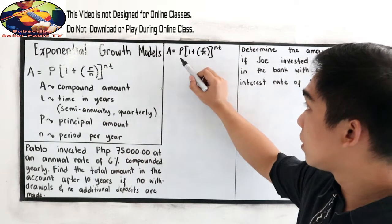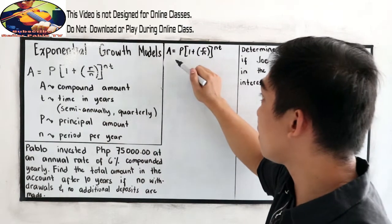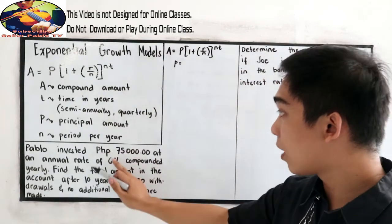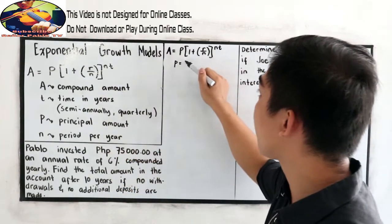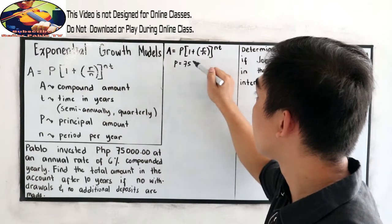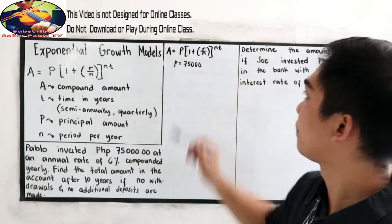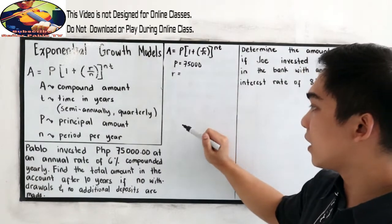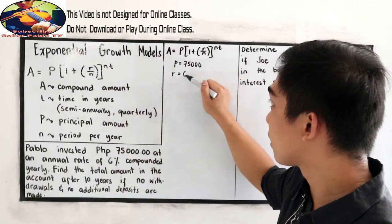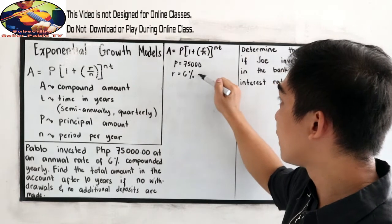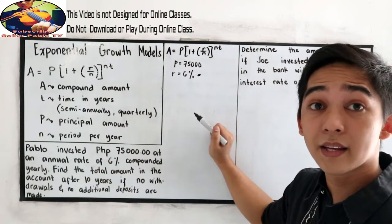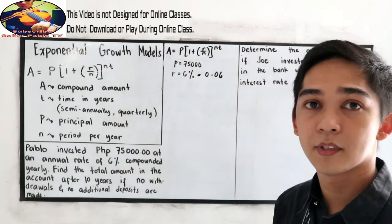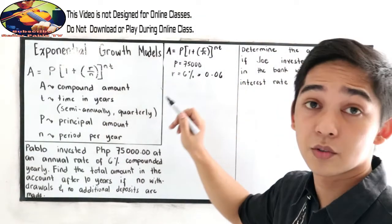So, let us find what is P, the value of P. His principal amount is $75,000. Next, our rate is 6%. In decimals, that is 0.06. Move the decimal two to the left.